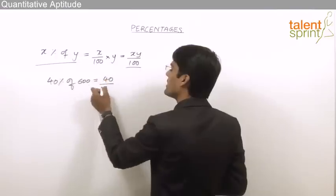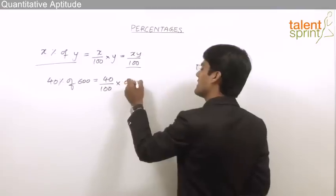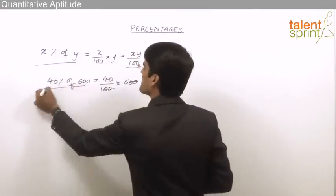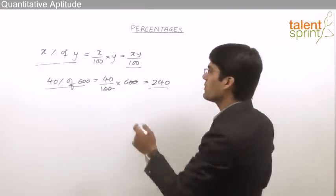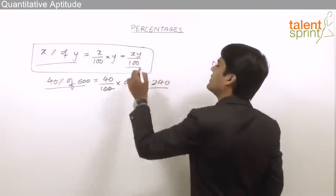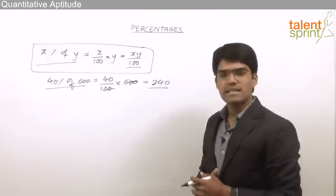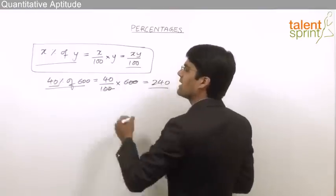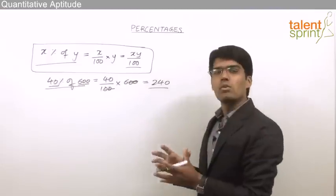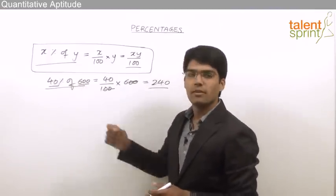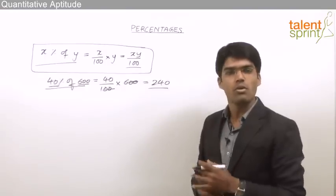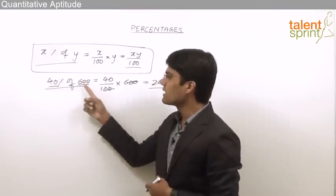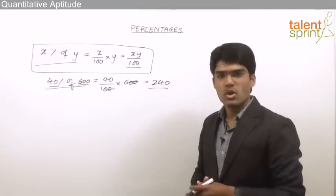So x percent of y equals xy by 100. In any percentage calculation we have three types of values: the percentage value (40 percent), the maximum value (600), and the absolute value (240). Out of these three, any two will be given and we can calculate the third one.